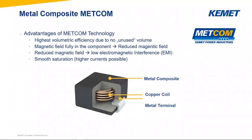As a summary of the metal composite METCOM technology: the advantages include the highest volumetric efficiency because you have no unused volume — the metal composite material is fully pressed around the coil. The magnetic field is fully concentrated inside the component, giving a reduced magnetic field outside and thus low EMI. And we have this smooth saturation, which means higher currents are possible. This is the main advantage of METCOM technology.